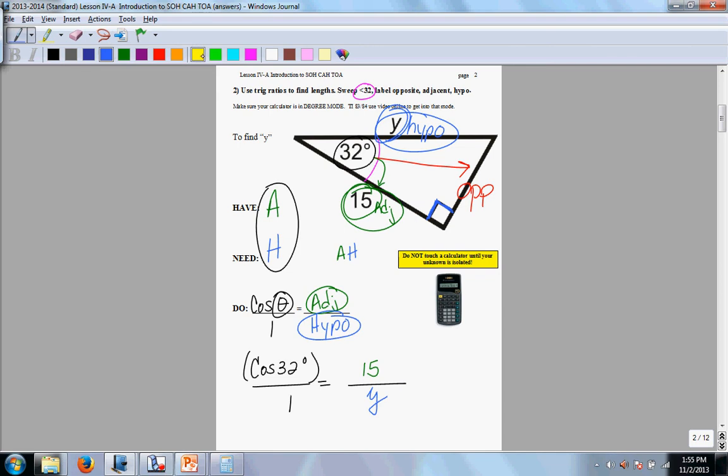Now do not touch that calculator until you isolate y. Do not touch that calculator until you isolate y. Y is not isolated right now. Don't touch the calculator. First thing we do is we cross multiply. I'm going to bring that over here. So we end up with cosine 32 parentheses times y equals 15. Why 15? Because it's 15 times 1.